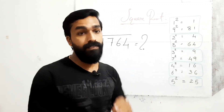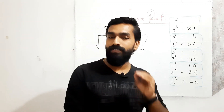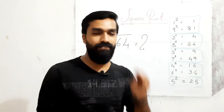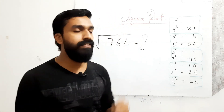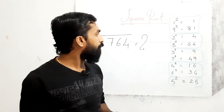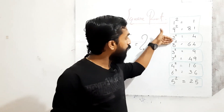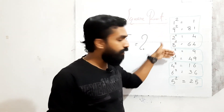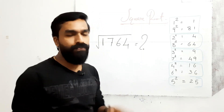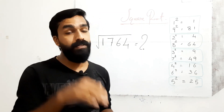These groups you have to study properly, then only you can find the square root of numbers very easily. This is the trick for finding the square root of any number. So the groups are: 1 & 9, 2 & 8, 3 & 7, 4 & 6, and 5. You will get the idea of how we use these groups while doing the problems.